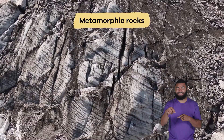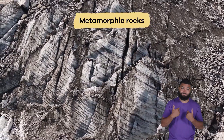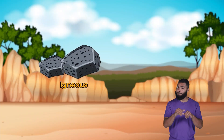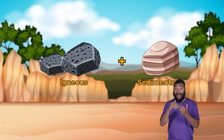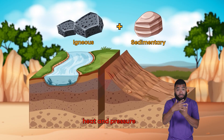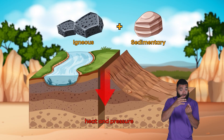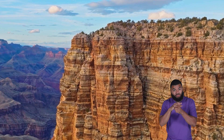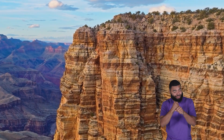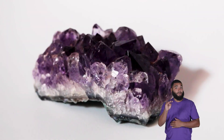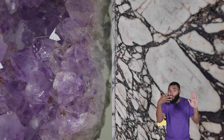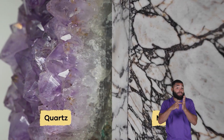Metamorphic rocks are the least common type of rock. They are formed from igneous and sedimentary rocks that have been transformed by intense heat and pressure over millions of years. These rocks often have ribbon-like layers and crystals in them. Stones like marble and quartz are examples.